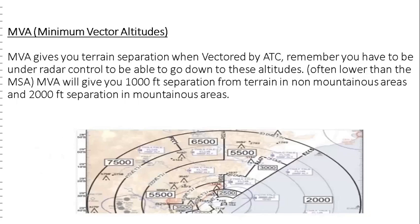Minimum Vectoring Altitude gives you terrain separation when vectored by a traffic controller. Remember, you have to be under radar control to be able to go down to these altitudes. Often lower than the Minimum Sector Altitude, Minimum Vectoring Altitude will give you 1,000 feet separation from terrain in non-mountainous areas and 2,000 feet separation in mountainous areas.